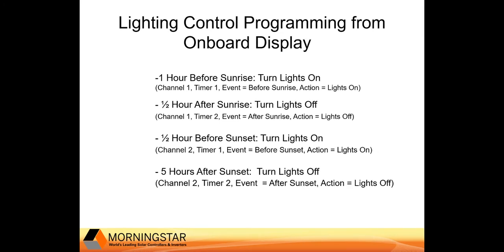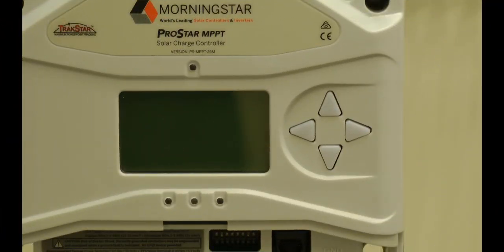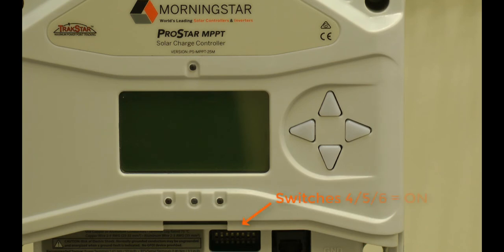Next, we're going to see what this looks like on the actual controller. Here we are at our charge controller — currently it is powered off and connected to a 12-volt battery. We do not need solar or the load connected in order to program it. This unit has the onboard display and the navigational buttons. The first thing we're going to do to enable access to the custom menus from the onboard display is set switches 4, 5, and 6 to the on position. Then we will power on the charge controller.